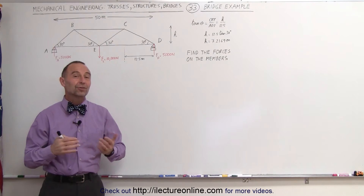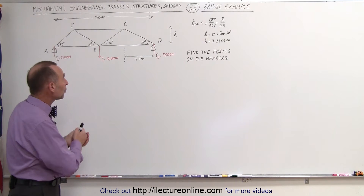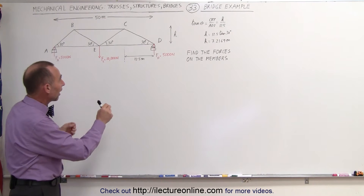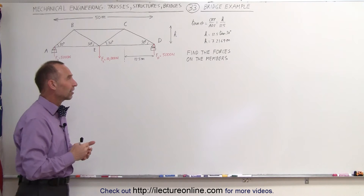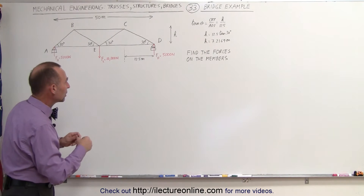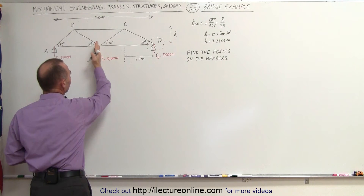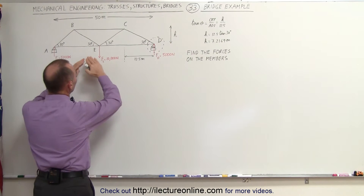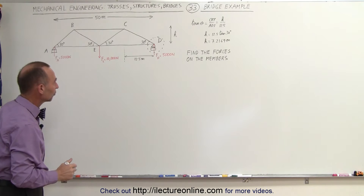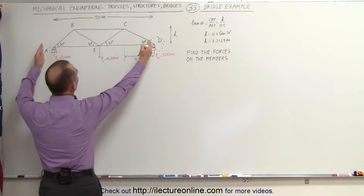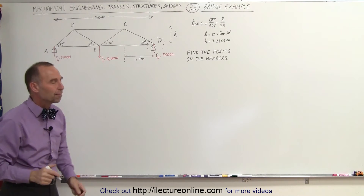Welcome to ElectronLine. Here's another interesting example of a bridge structure — it's a little different from what you normally would see. What we're trying to do is find the forces on the members, and in the next video we'll do it again using the method of sections. On this bridge structure we have a single load at the middle of 10,000 newtons. Since this is totally symmetric, we can assume a support force on either side of 5,000 newtons. The length of the bridge is 50 meters, so each of the four sections equals 12.5 meters — everything is symmetric.